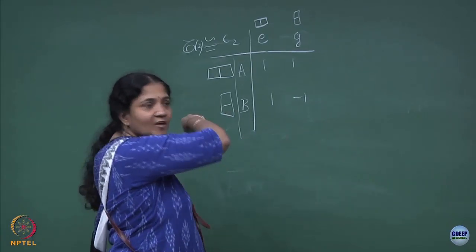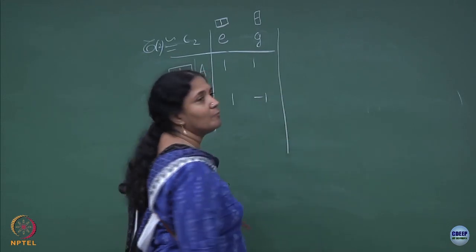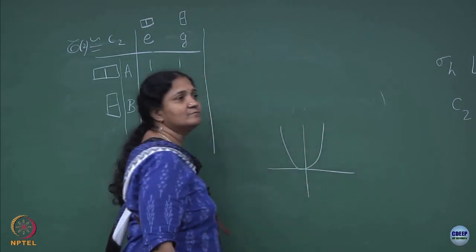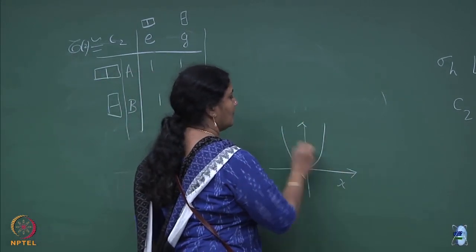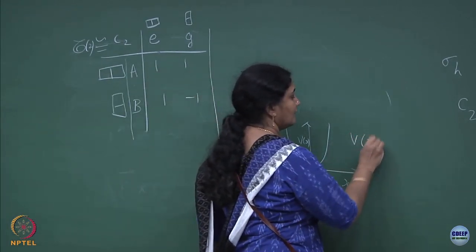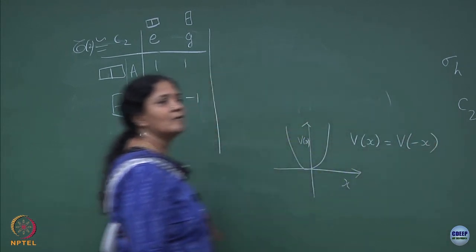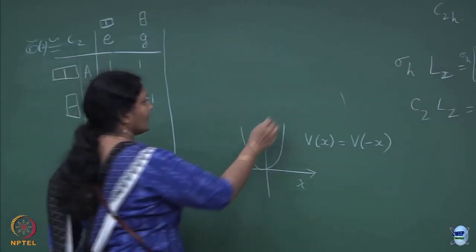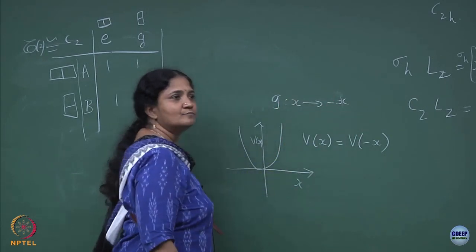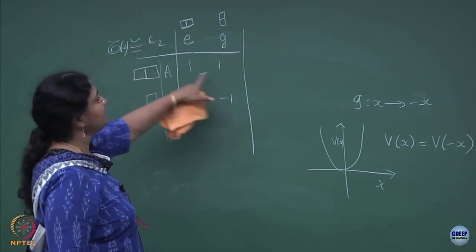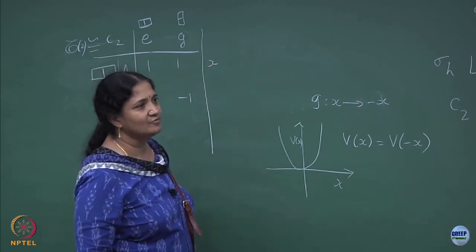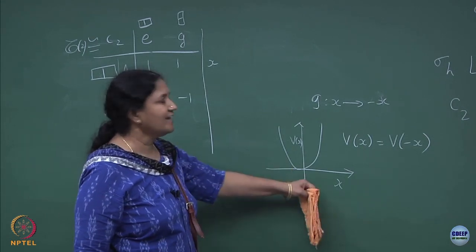What are the basis vectors? You can look at a one-dimensional problem. Let us take the 1D simple harmonic oscillator. What is the symmetry? V(x) = V(−x). I can define an operation g such that g acting on x takes it to minus x. The identity does nothing and g changes x to minus x, so x is a good coordinate. I am confining myself to the 1D problem.